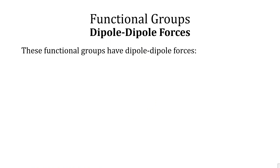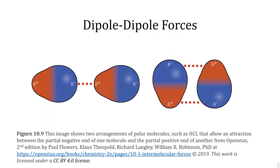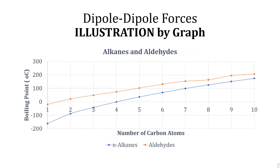These functional groups have dipole-dipole forces: thiols, aldehydes, ketones, esters, and ethers. This figure illustrates a polar molecule like HCl, where there is a permanent dipole present on the molecule — one end is highly more electronegative than the other. The negative end of one molecule attracts the positive end of another molecule. This graphical illustration shows boiling points for various n-alkanes and aldehydes.